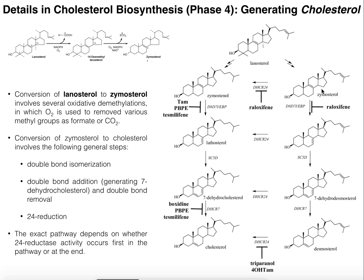Now we've generated zymosterol. Although this pathway looks complicated, pretty much all the enzymes are the same — the key variable is when you reduce the double bond on the tail. That double bond is reduced by an enzyme called 24-reductase, which can act on any of these molecules at any point in the pathway. For example, 24-reductase could act on lanosterol first, reducing the tail double bond before the decarboxylations are performed.